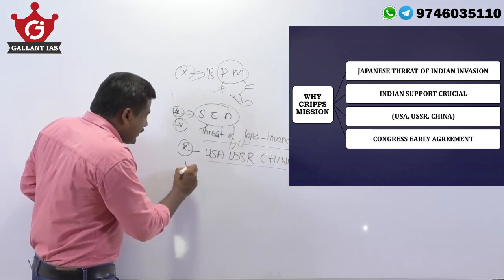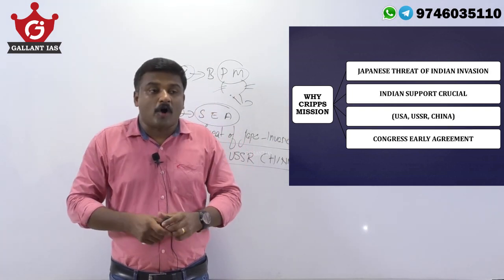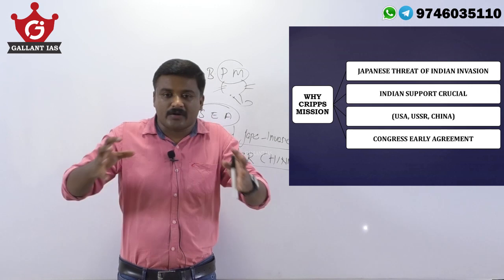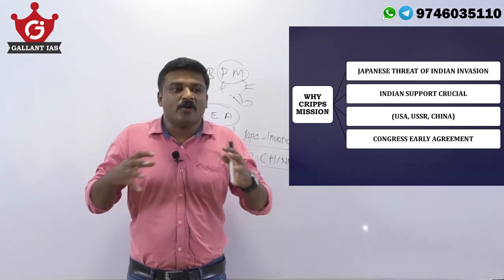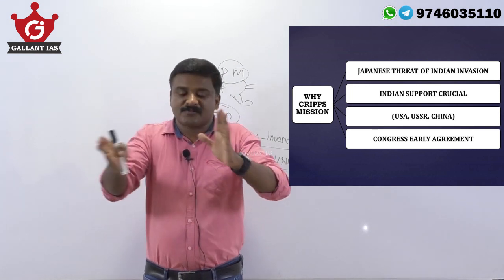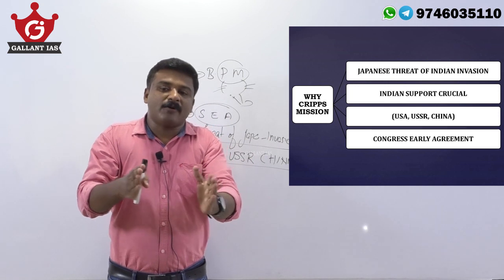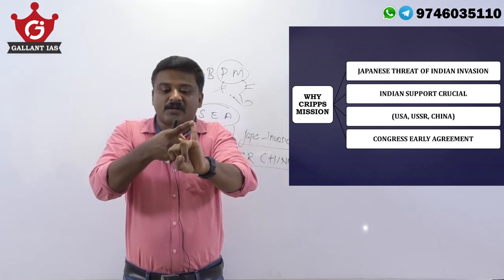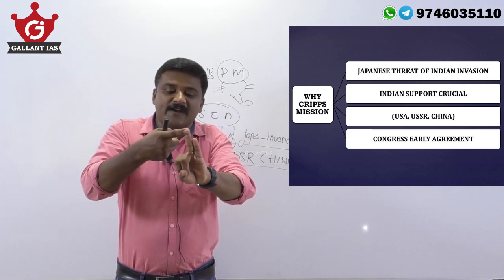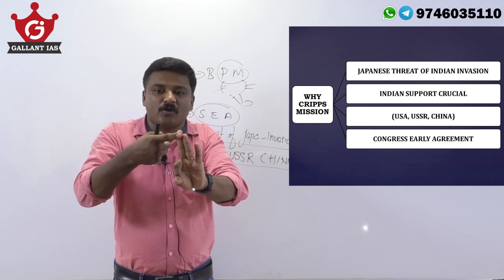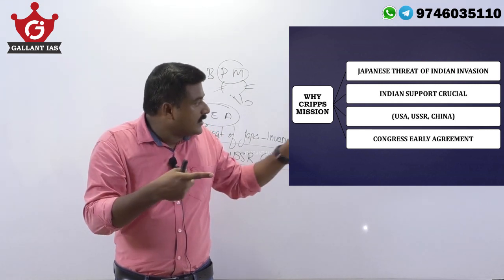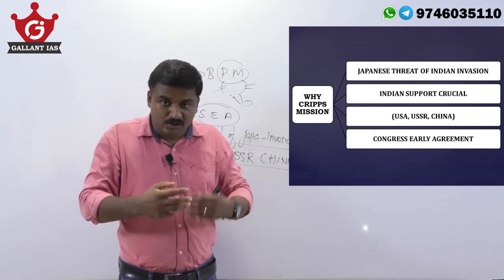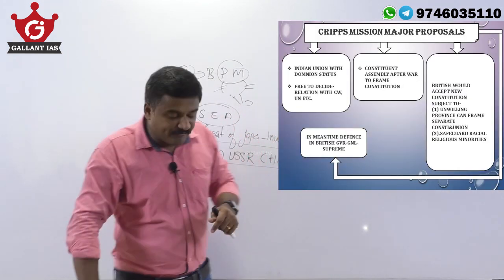Another reason was that Congress had already promised that if substantial power is transferred to Indian hands — Indianization of government — there will be support to Britain. So the key causes were: pressure from USA, USSR, and China; Britain facing reverses in South East Asia with a possible Japanese invasion threat; and Congress's conditional promise of support.